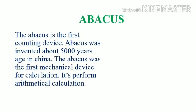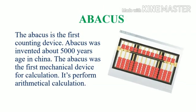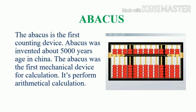Abacus. The abacus is the first counting device. The abacus was invented about 5000 years ago in China. It was the first mechanical device for calculation.